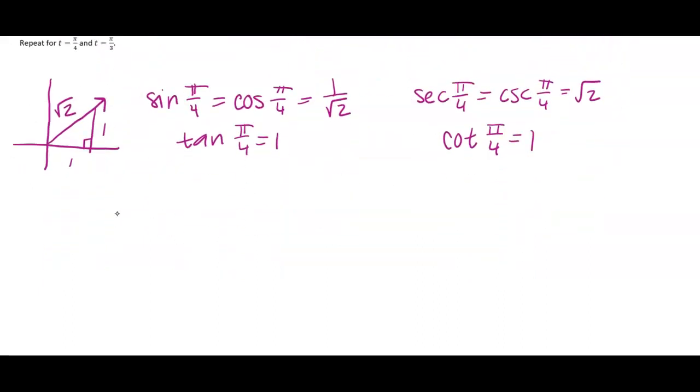For pi over 3, that's the same as a 60 degree angle. So now my small side is down here as like the base, hypotenuse is always 2, and the side opposite 60 degrees is going to be root 3.